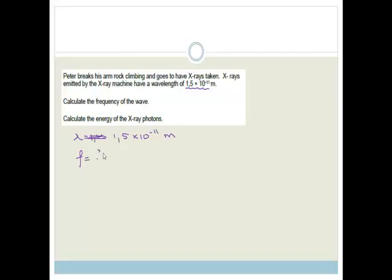So now, if you look on your formula sheets, you will see there's an equation that says C is equal to lambda f, where C is the speed of light and is 3 times by 10 to the 8 meters per second. So if we've got C and we've got lambda from that, do you agree we can get frequency? So let's rearrange for frequency.